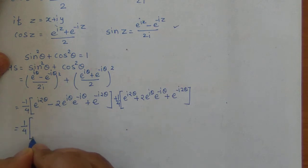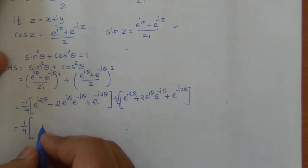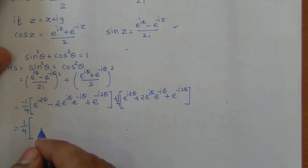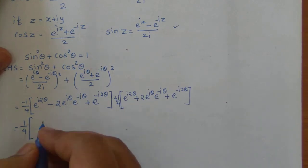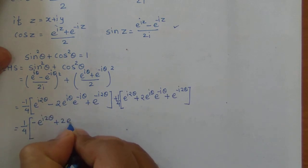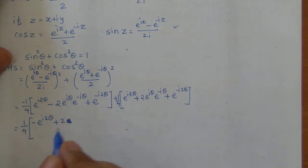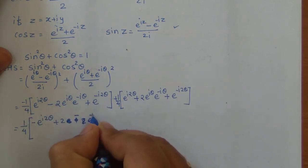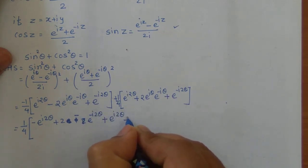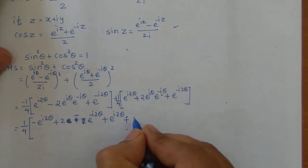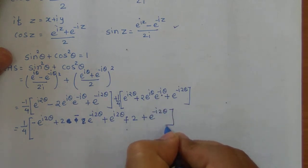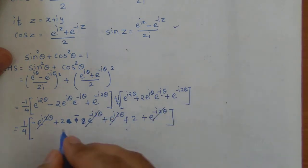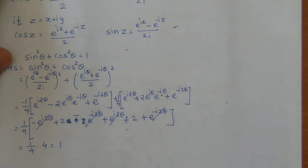Taking 1/4 common, inside the bracket we get: the minus sign applied to the first expansion and plus for the second. The e^(iθ)·e^(-iθ) terms equal e^0 = 1, giving ±2. The e^(±i·2θ) terms cancel (minus and plus), and 2 + 2 = 4. So 1/4 × 4 = 1. Hence sin²θ + cos²θ = 1 is proved.